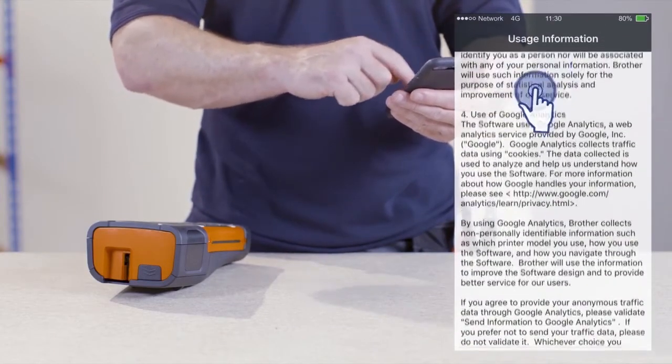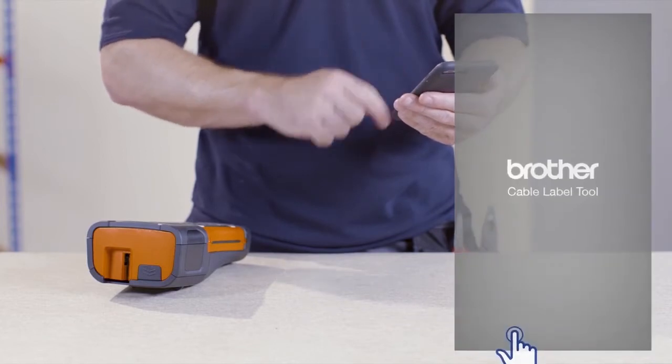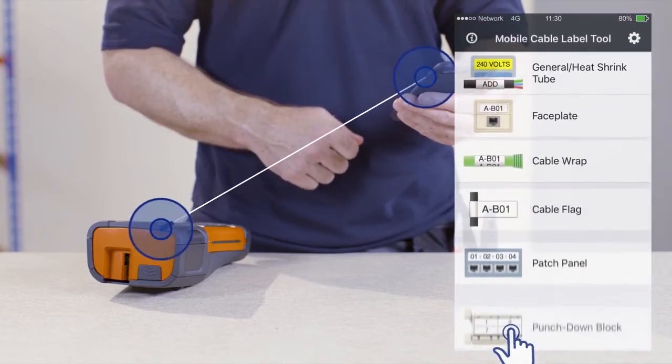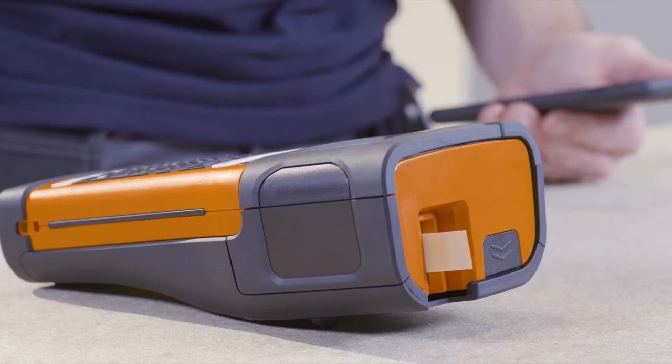Now go to the app. Once you've read and accepted the license terms, your device will begin searching for the printer via the Wi-Fi connection.